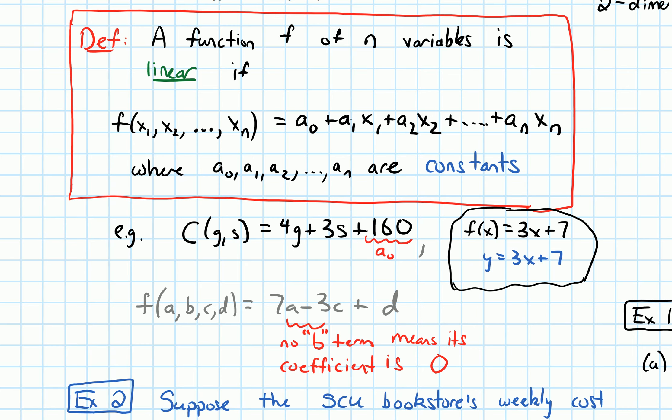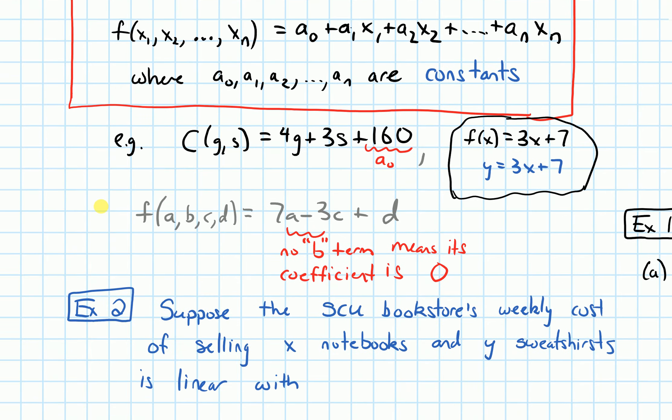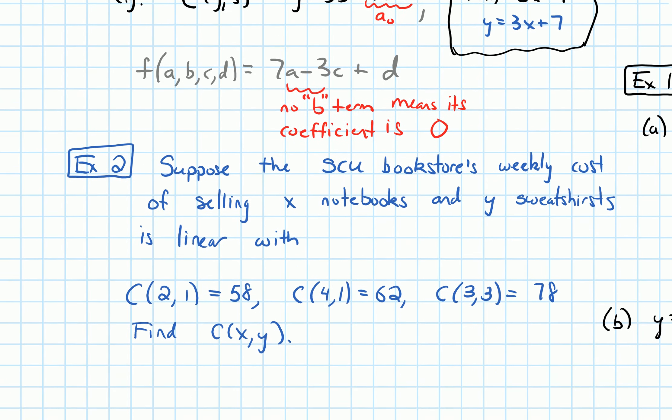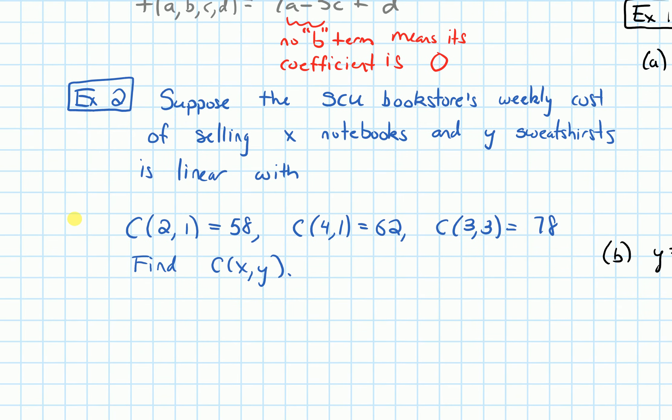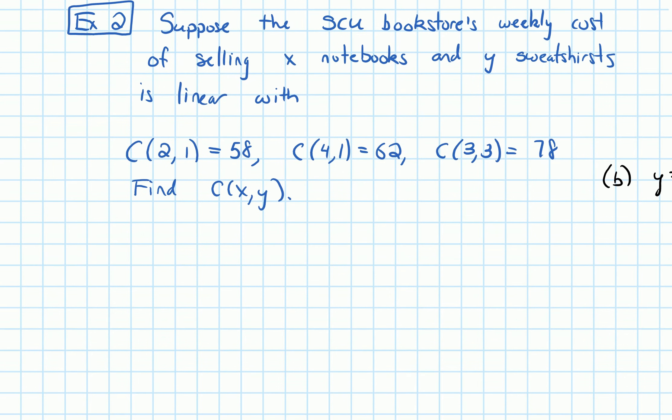So let's look at another example. So in this example, we're going to be given some data points. And we're going to be asked to come up with the equation of the linear function. So suppose that the SCU bookstore's weekly cost of selling x notebooks and y sweatshirts is linear with the following data points like C of 2 comma 1 equals 58 and so on. So there's two other values like that. And it asks us to find C of x comma y.